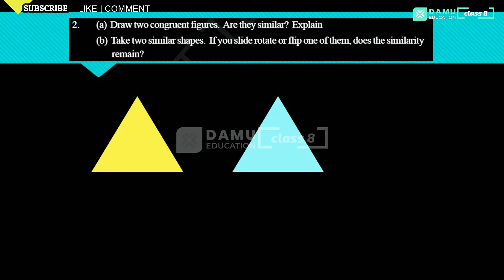Our second question is: draw two congruent figures. As an example, let's take two triangles. We'll name them — the first triangle has vertices A, B, C.